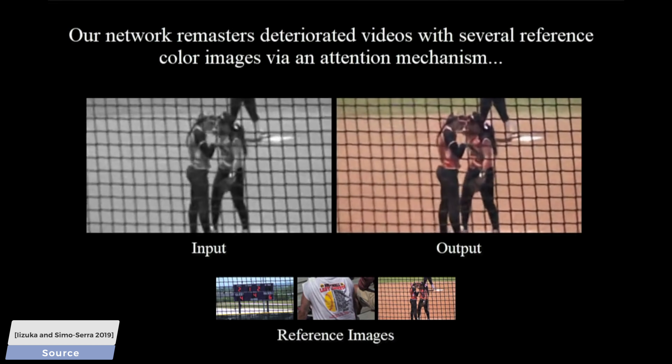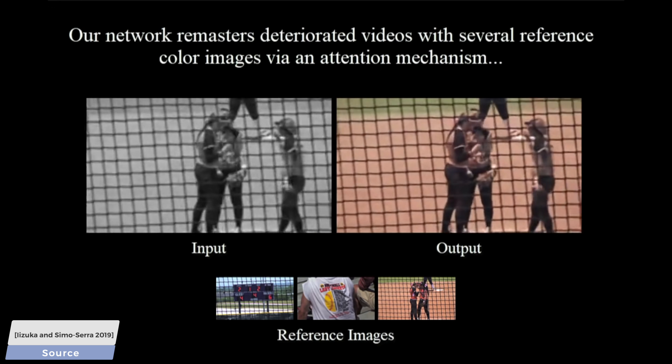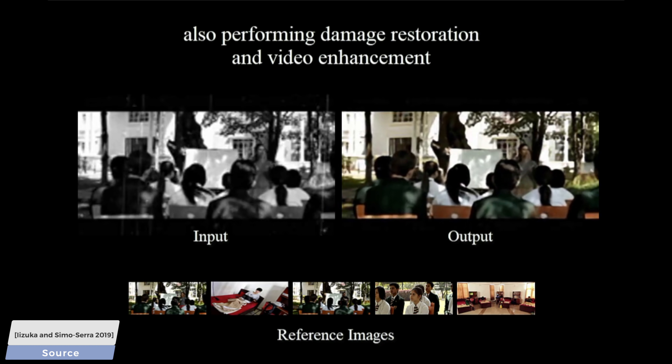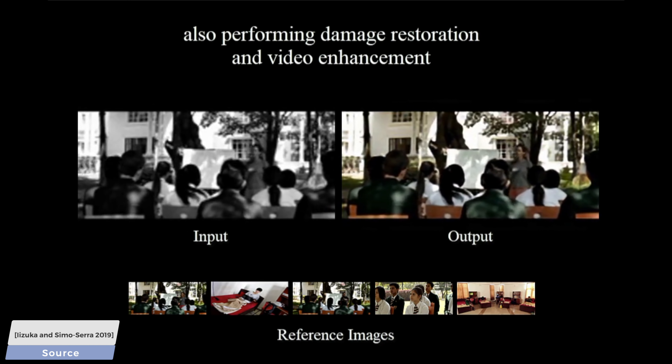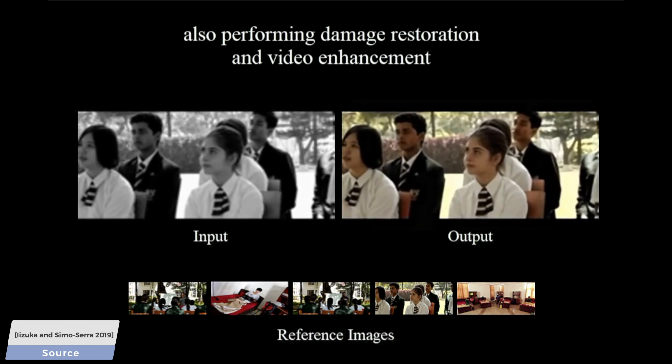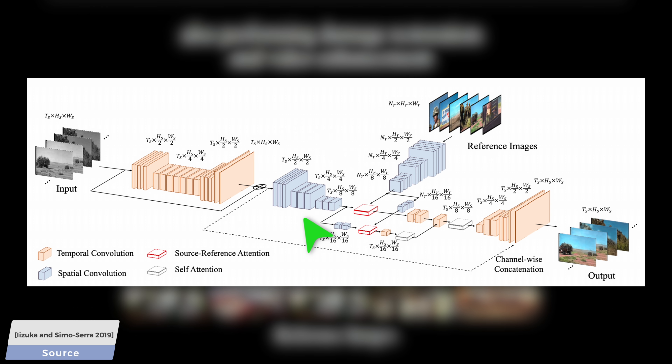The architecture of the neural network used for all this also has to follow the requirements appropriately. For instance, beyond the standard spatial convolution layers, it also makes ample use of temporal convolution layers, which helps smear out the colorization information from one reference image to multiple frames.